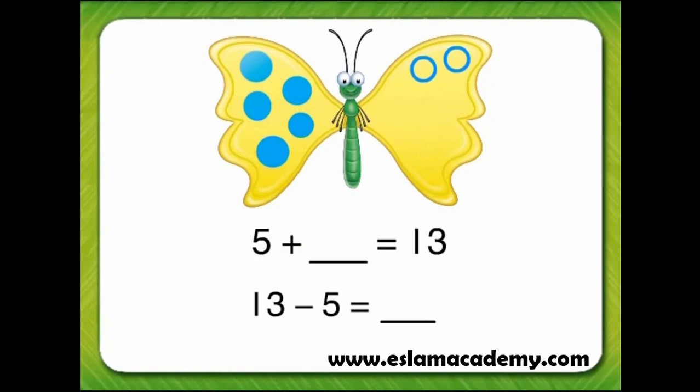6, 7, 8, 9, 10, 11, 12, 13. Let's count the dots we drew and see what 13 minus 5 equals.